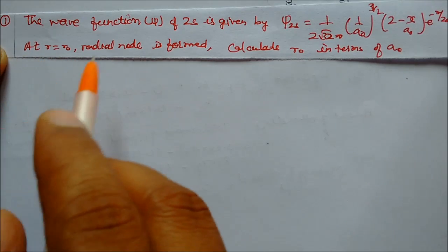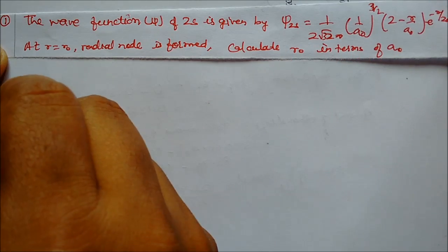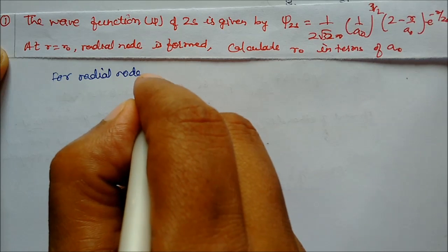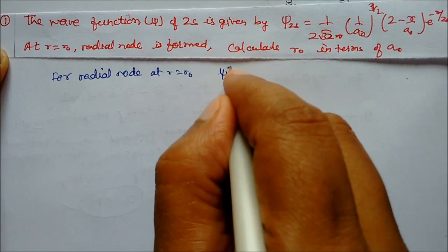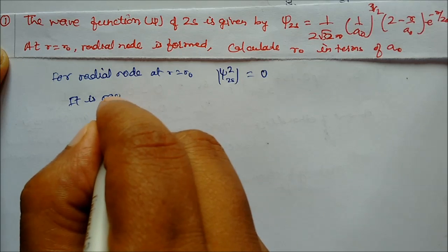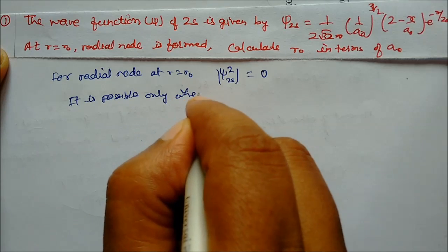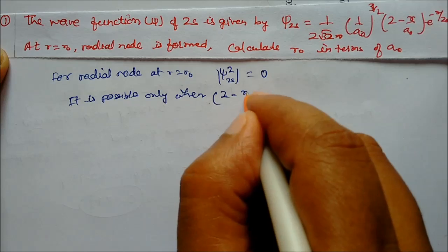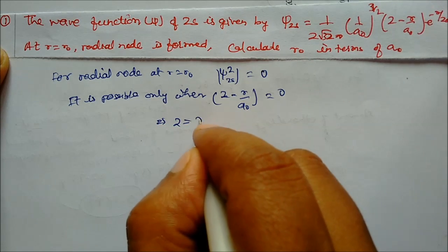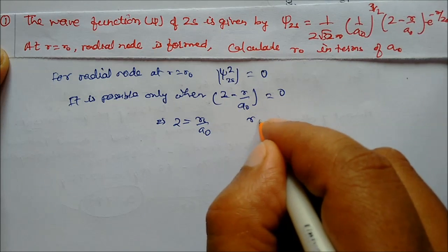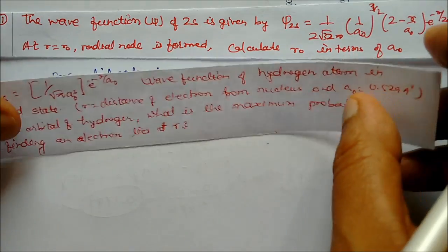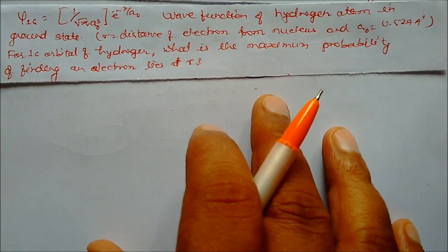We need to calculate r₀ in terms of a₀. For a radial node, at r = r₀, |ψ|² = 0, which is only possible when (2 - r/a₀) = 0. This gives 2 = r/a₀, so r₀ = 2a₀. That is our answer — r₀ in terms of a₀ is equal to 2a₀.